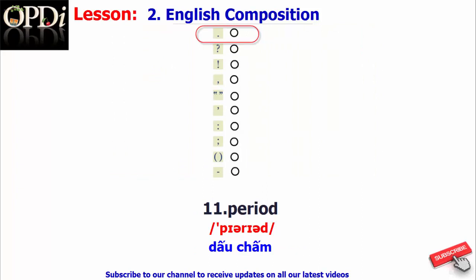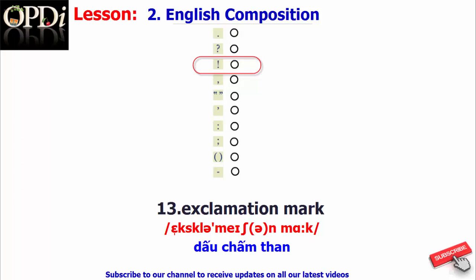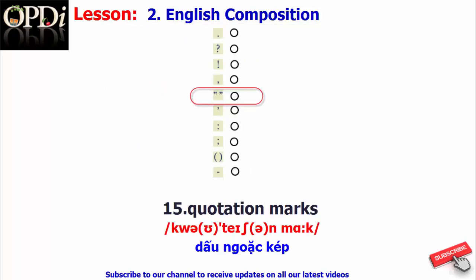Punctuation marks include: the period, the question mark, the exclamation mark, the comma, and quotation marks.